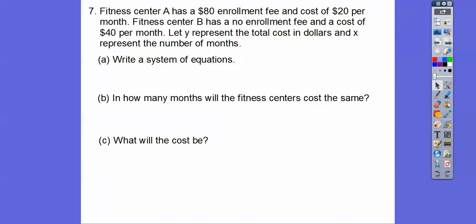Word problem: Fitness center A has an $80 enrollment fee and costs $20 per month — there's our slope, the number that goes in front of x. Anything that says 'per' goes in front of x. So y equals mx plus b, b is 80. Fitness center B has no enrollment fee, so b is 0, and costs $40 per month, so y equals 40x plus 0. Let y represent the total cost in dollars and x the number of months. Here are our two equations.